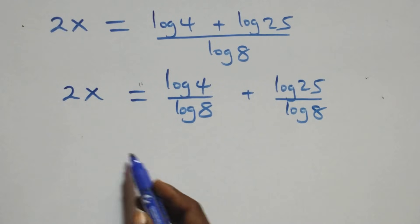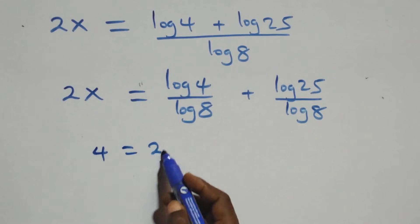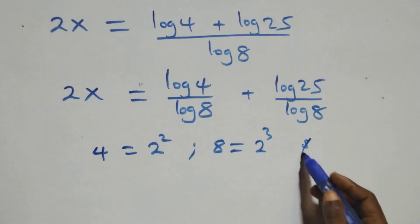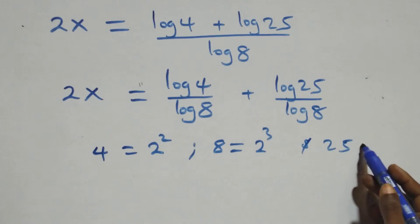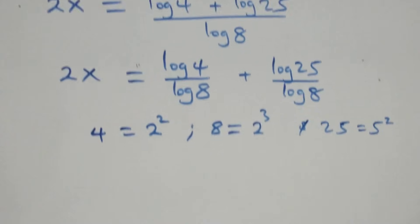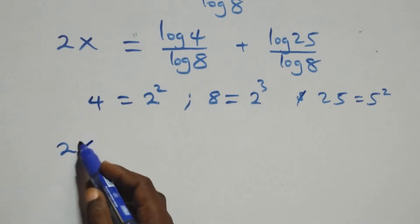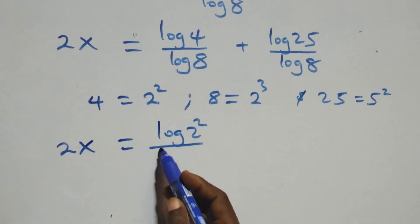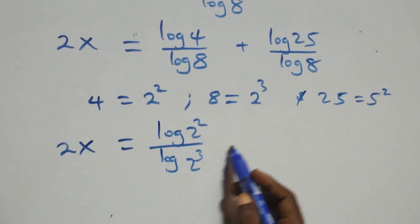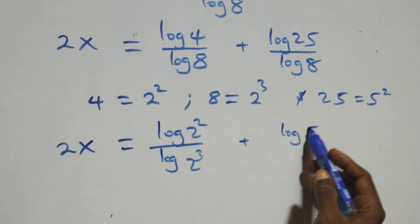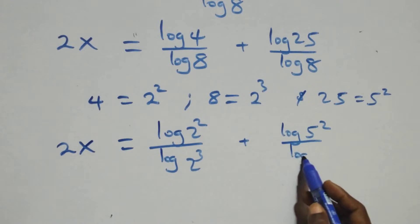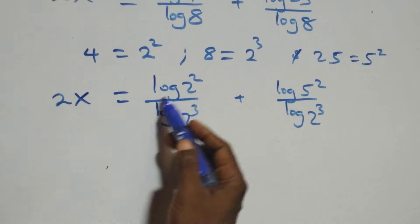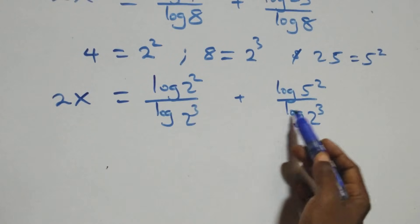We can write 8 as 2 times 2 times 2, which is 2 cubed, and also 25 as 5 times 5, which is 5 squared. And 4 as 2 squared. So what we have becomes 2x equals log(2 squared) over log(2 cubed) plus log(5 squared) over log(2 cubed). Applying the power law of logarithms, the exponents come down: 2 comes here, 3 comes here, also 2 comes here, and 3 comes here.